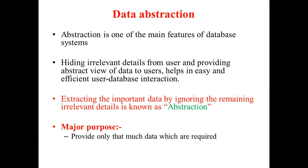To make user interaction with a database very easy, the internal irrelevant details can be hidden from the user. This process of hiding irrelevant details from the user is nothing but called abstraction — hiding irrelevant details and providing only the required data view to the user. It helps in easy and efficient user-database interaction. Extracting the important data by ignoring the remaining irrelevant details is nothing but called abstraction. In short, providing only the data which is required by hiding unwanted data is the main use of data abstraction, and with that, interaction with a DBMS will be carried out very smoothly.